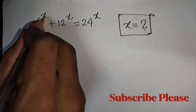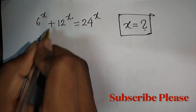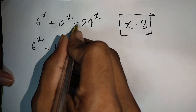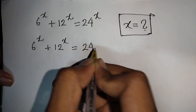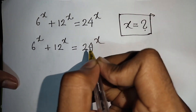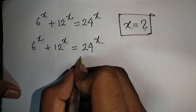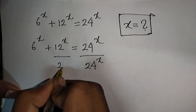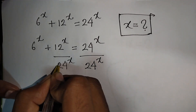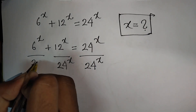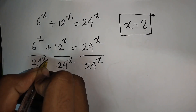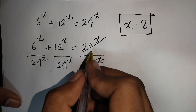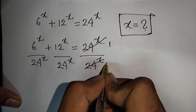Find the value of x: 6^x + 12^x = 24^x. We divide both sides by 24^x, divided by 24^x. The 24^x terms cancel out.